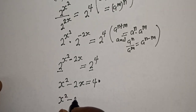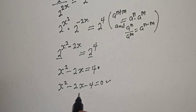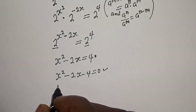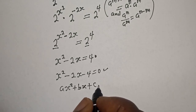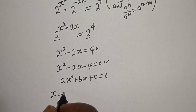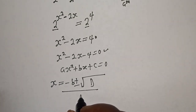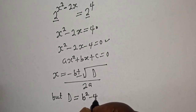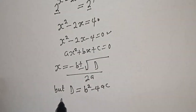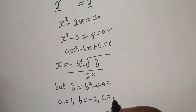So s squared minus 2s minus 4 is equal to 0. This is a quadratic equation. Let's solve it using the quadratic general formula: for a s squared plus b s plus c equal to 0, s equals minus b plus or minus square root of the discriminant over 2a. From this equation, a equals 1, b equals minus 2, c equals minus 4.